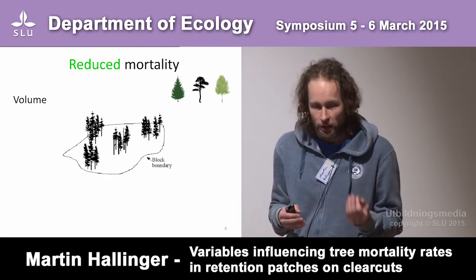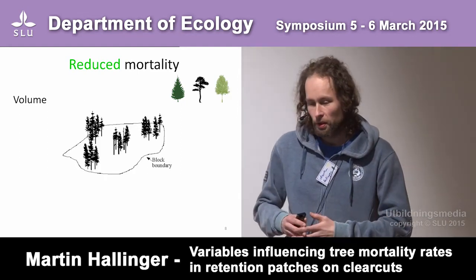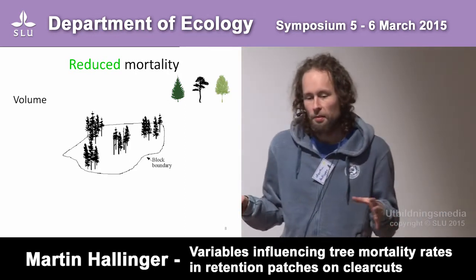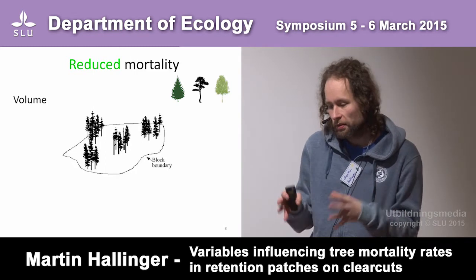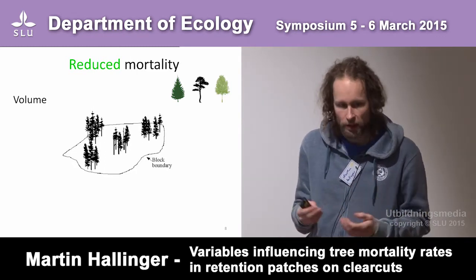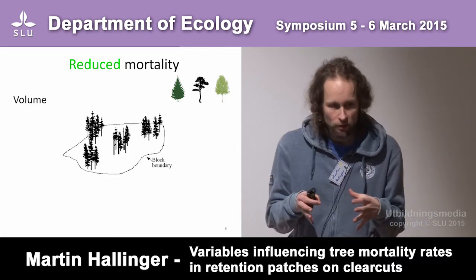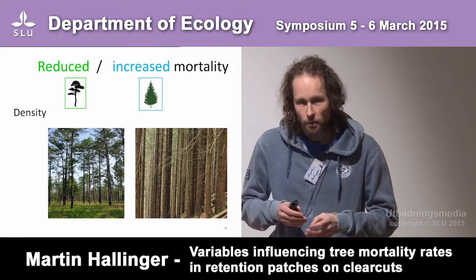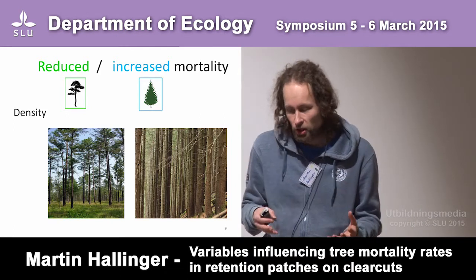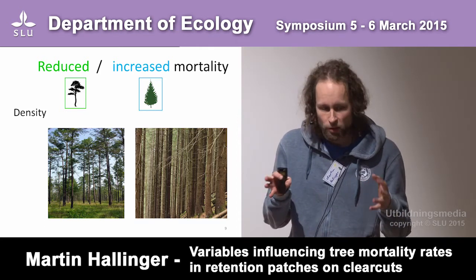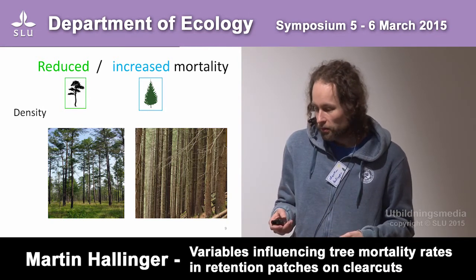Volume, for example, was a very important factor influencing mortality. If you think about an area, a big retention group area is good, but a big area can only comprise a small number of trees and you don't have the same sheltering effect, whereas a small area can have lots of trees. Density can act in different directions — it can either facilitate survival through sheltering or lead to increased mortality through competition within the retention tree group.